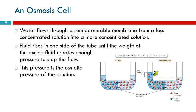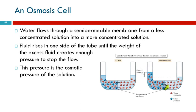In reverse osmosis, you want to take the contaminated water and make it into pure water. Osmosis is going to dilute the solution, but it's not going to purify it. If you put pressure on the side with the dirty water, you can force water through the membrane to the other side — that's called reverse osmosis. It's against what nature wants to do.